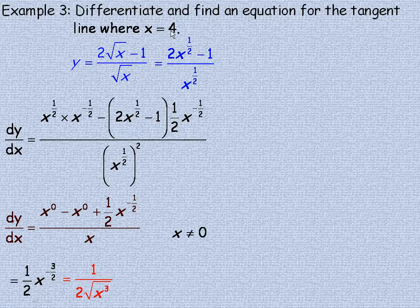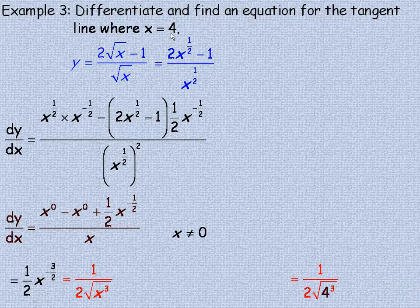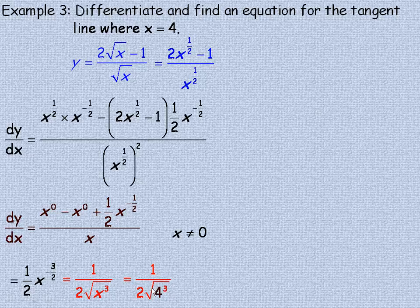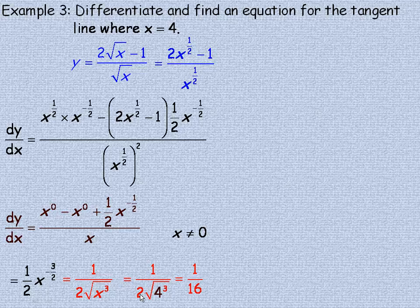Now we're not trying to substitute 0 in place of x, we're substituting 4. So I'm going to put 4 in place of x. So 4 cubed is 64. Take the square root, and you get 8. Multiply it by 2, and you get 16. So 1/16 is the slope of our tangent line.